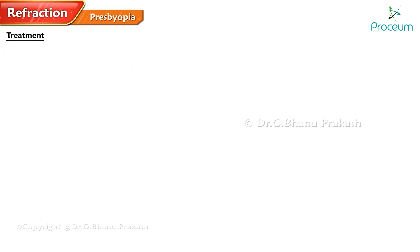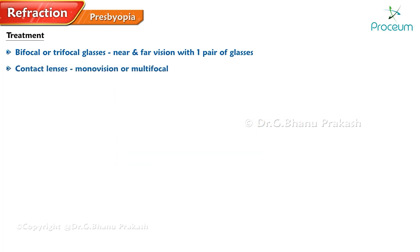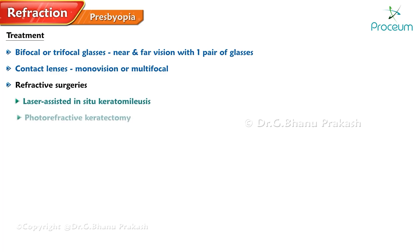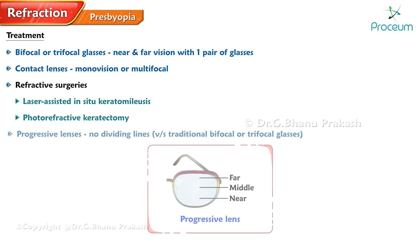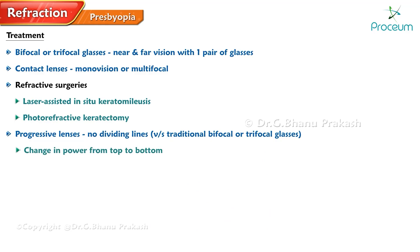When it comes to treating presbyopia, there are several options available. One common option is to prescribe bifocal or trifocal glasses, which allow the patient to see both near and far objects with one pair of glasses. Alternatively, patients can choose contact lenses in designs such as monovision or multifocal. Refractive surgeries such as LASIK or photorefractive keratectomy can also be considered. Progressive lenses are also available, gradually changing in power from top to bottom, providing a smooth transition between distance, intermediate, and near vision.